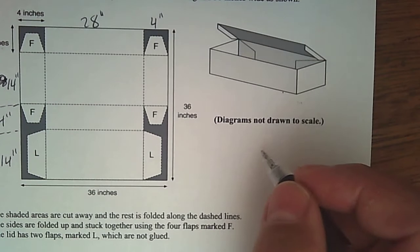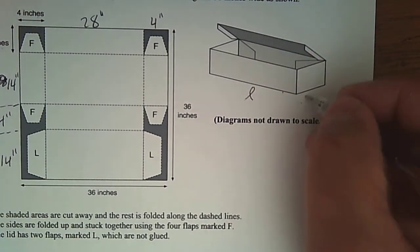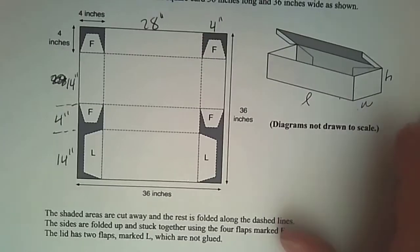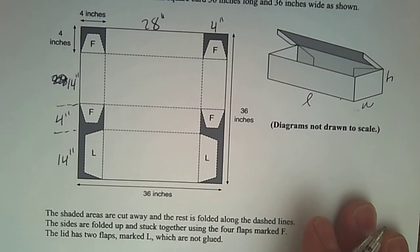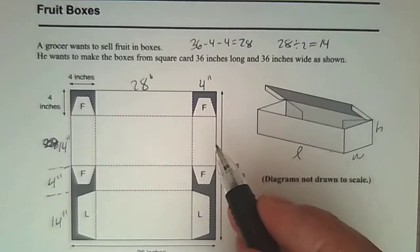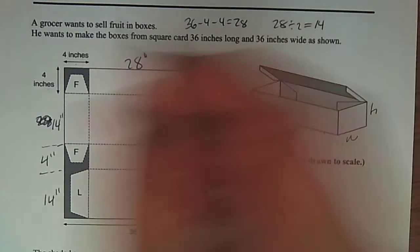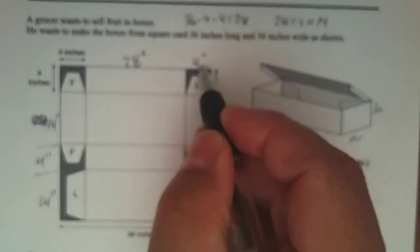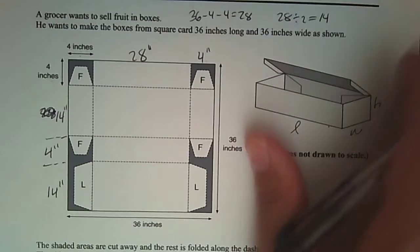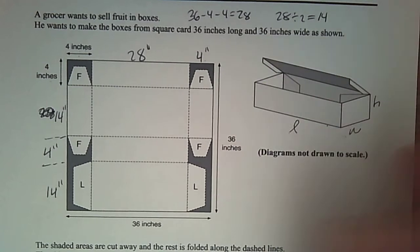From the diagram, I need to get length, I need to get width, and I need to get the height of the box by looking at the flat version of it. I know the corners are four inches. So I've got four inches, four inches, four inches.